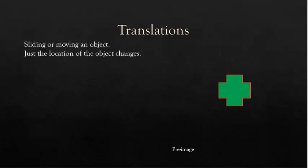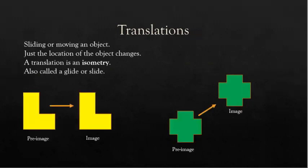Here's a translation. We have the preimage — what we can call it, or the original figure — and we're going to slide or move the object, and only the location of the object will change. This is called isometry; it's called a glide or a slide. So that preimage moved up here to this image. We have this L preimage, and it's going to slide over to make this image. A slide or a glide is a translation.